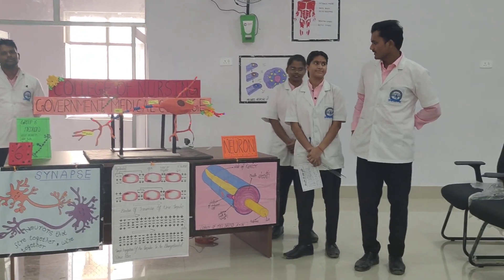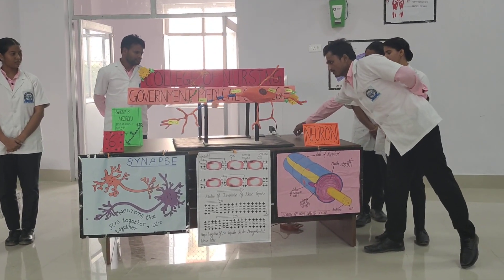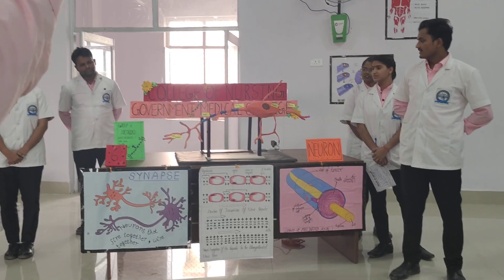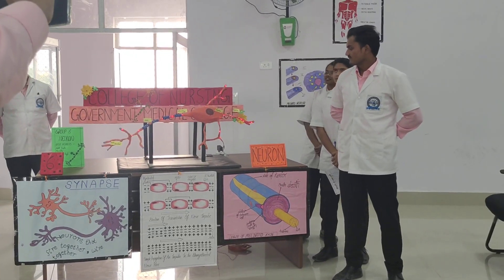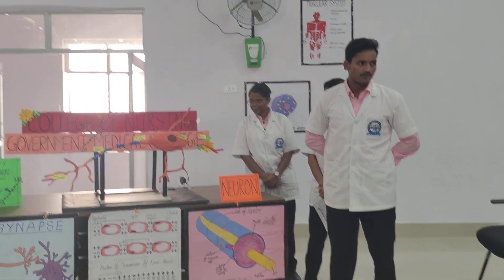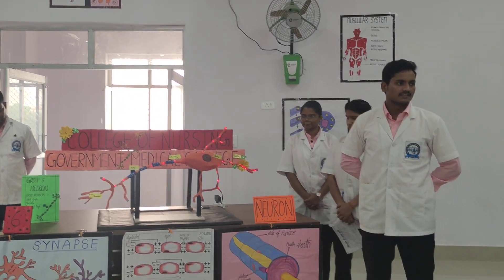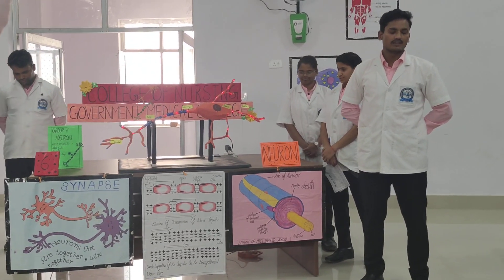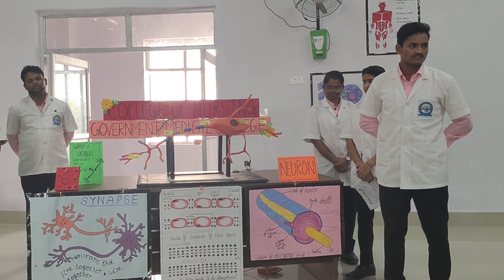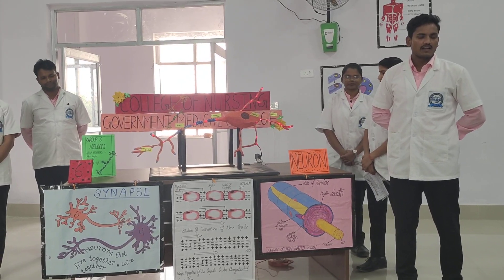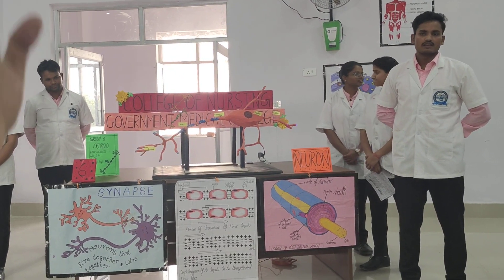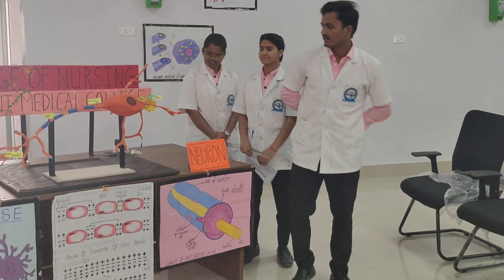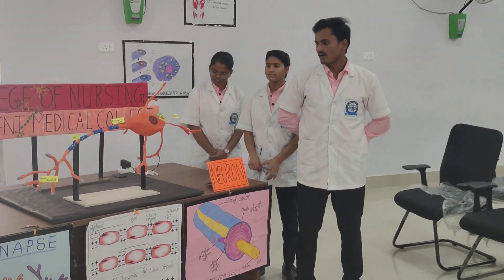I am going to explain about the cyton. Cyton is also known as the cell body. It has granules and nissl's cytoplasm with a large nucleus, and has a larger size than other parts of the neuron. The neuron is powerful.